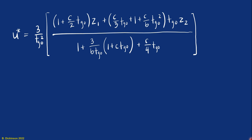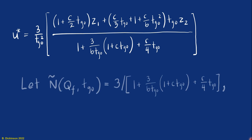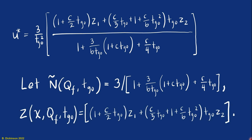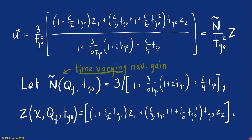If we take our optimal control result and define a time-varying gain, call it N-tilde, and a new state variable — essentially what's in the braces of U* in the numerator — then we can write U* in a form that's like zero effort miss proportional navigation. The differences are that N-tilde is a time-varying navigation gain and Z is kind of like zero effort miss but has these additional terms in parentheses.